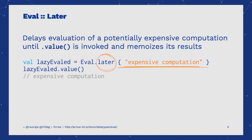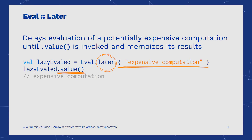`Later` defers the computation until `value` is invoked. `Later` also memoizes the computation — each time we invoke `value`, we obtain a cached value from the previous evaluation.